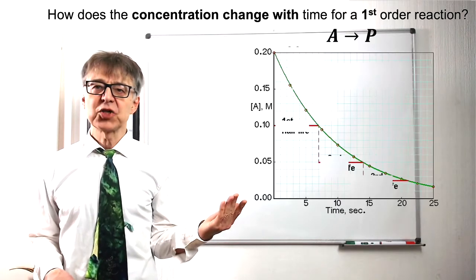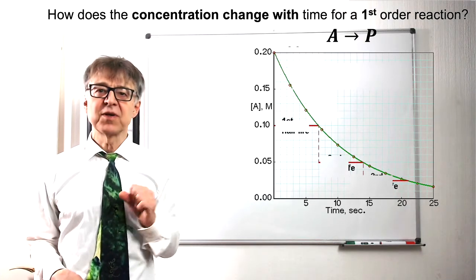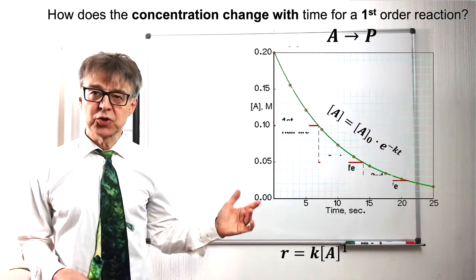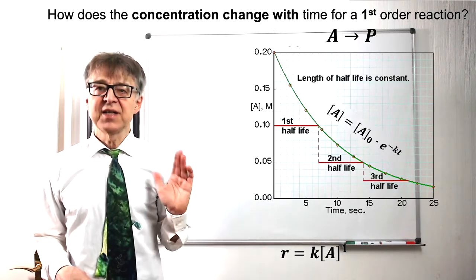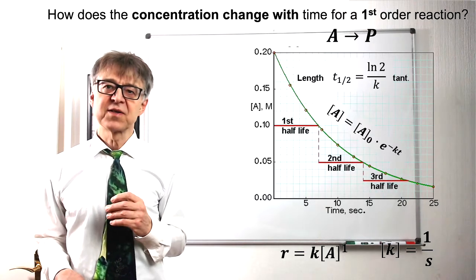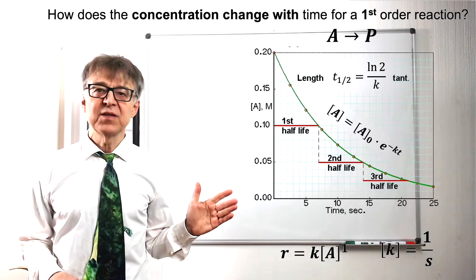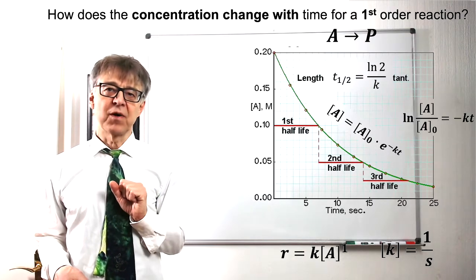Here we see a compilation of the equations that hold for a first-order reaction. The integrated rate law corresponds to an exponential function. The reaction rate is proportional to concentration. The half-life is constant here and directly linked to the rate constant. The unit of the rate constant is 1 over second. We can linearize the integrated rate law by plotting the logarithm of concentration versus time.